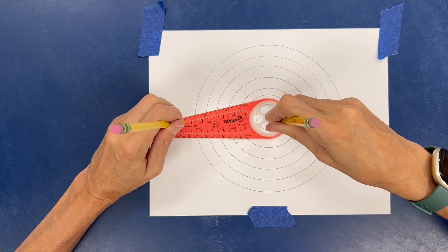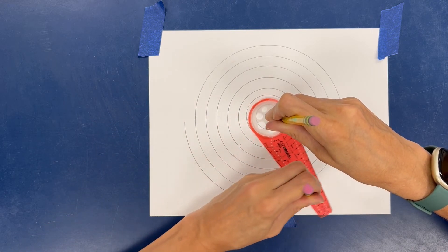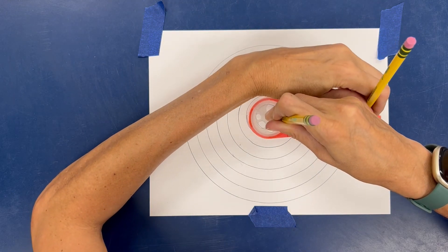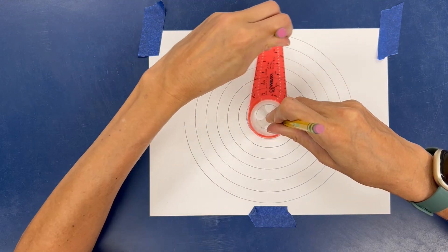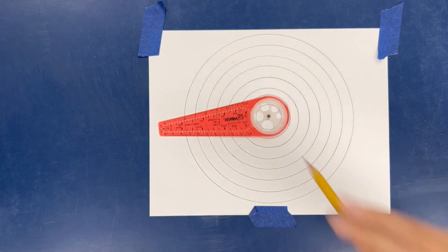You don't have to press as heavy as I'm pressing. I'm only pressing heavy so you can see it. But lighter is actually better. One of my favorite sayings is draw light until you know it's right. Then you can make it darker. We are eventually going to go over this with marker anyway.